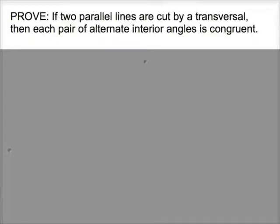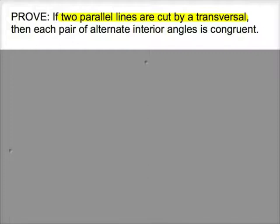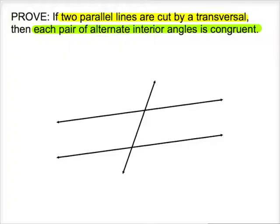Take a minute to read this statement we're about to prove. The statement highlighted in yellow is the hypothesis of the conditional statement. The hypothesis is the given information: two parallel lines cut by a transversal. The conclusion is that which we're trying to prove — we want to prove that the alternate interior angle pairs are congruent. Let's draw out the given information: two parallel lines cut by a transversal, showing that they're parallel and giving them names. I call them lines M and N cut by transversal T.